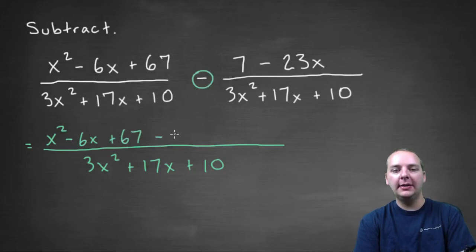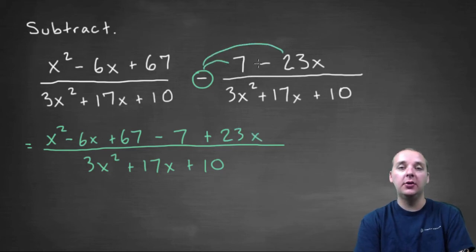And then we'll have minus 7, and this is important, we would have plus 23x. Now why plus? Well we did minus 7, and we also need to do minus negative 23x, which would create a plus, or a positive 23x.